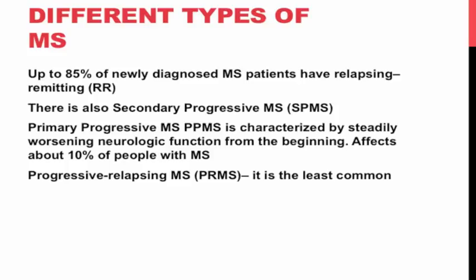A second type is secondary progressive multiple sclerosis, in which there is an apparent rate of progression that can vary over time. There can be improvements and downturns; however, there are no distinct relapses or remissions like in relapsing-remitting MS. The third type is primary progressive MS, characterized by steadily worsening neurological function from the very beginning. It only affects about 10% of people diagnosed with MS.